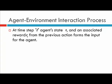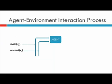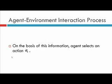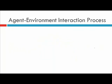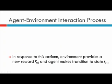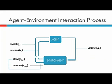At time step t, the agent's state st and the associated reward rt from the previous action at-1 form the input for the agent. On the basis of this input, the agent selects a particular action at from the set of all possible actions in state st. The agent then finds itself in a new state st+1 and receives reward rt+1. This is the overall process at each step of decision making.